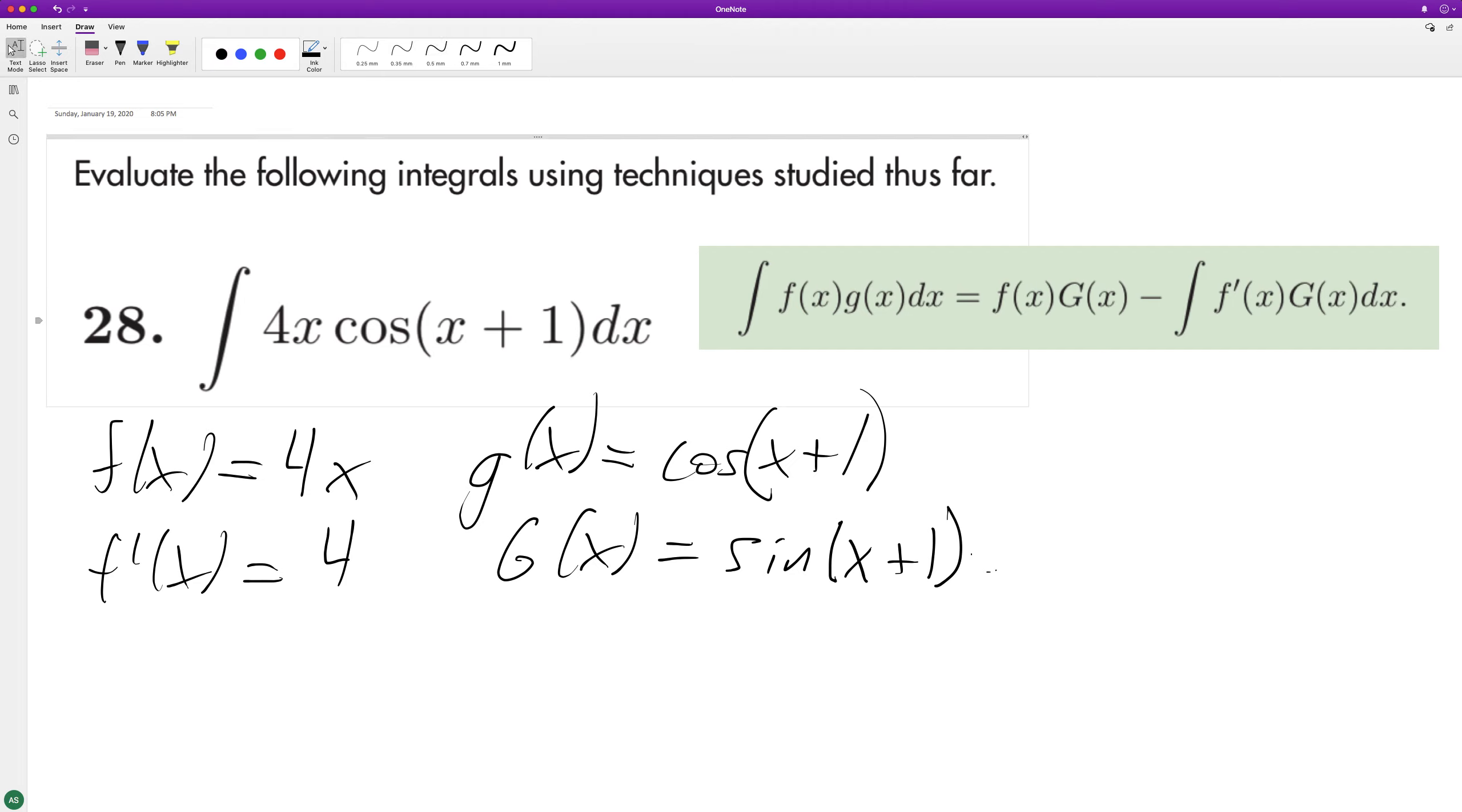When we integrate this, following our equation up there, we're going to get f(x), which is 4x, times the integral of lowercase g(x), which is sine of x plus one, minus the integral of f'(x), which is 4, times G(x), which is sine of x plus one.